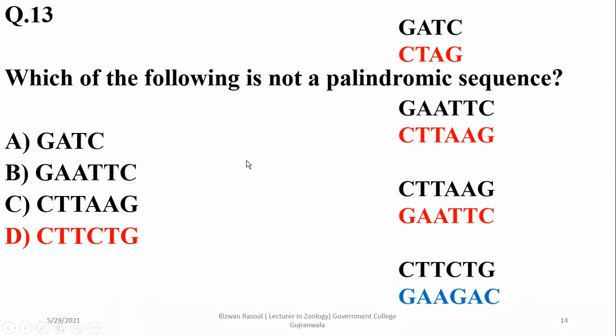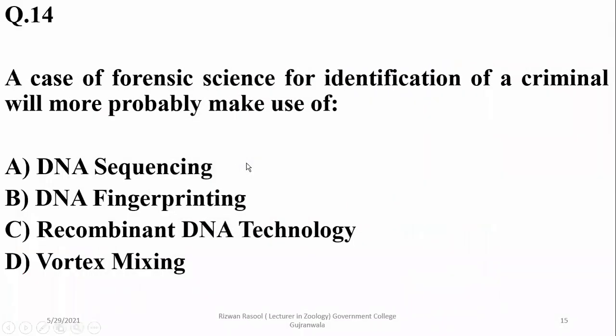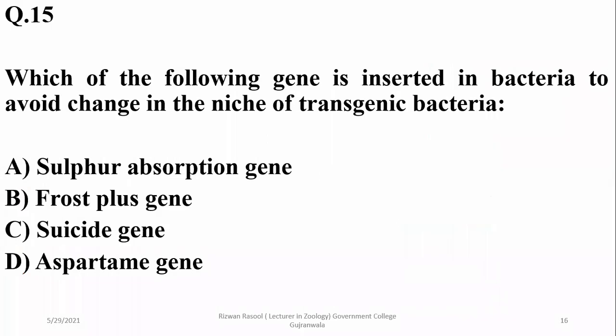In forensic science, for identification of a criminal, DNA fingerprinting would most probably be used, beta. Which of the following genes is inserted in bacteria to avoid changes in transgenic bacteria? It is the suicide gene, or self-destructive gene.